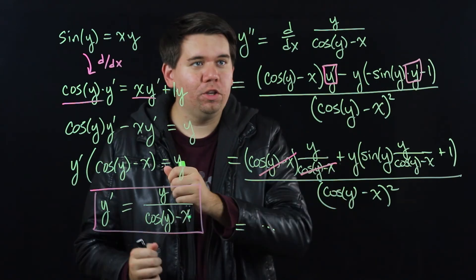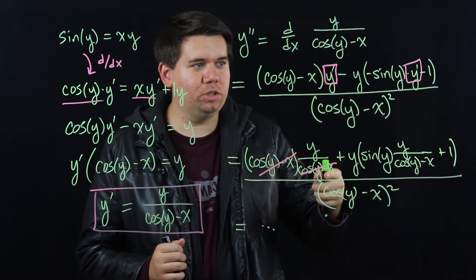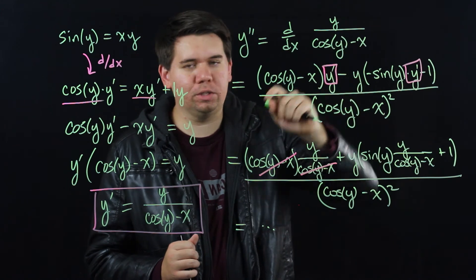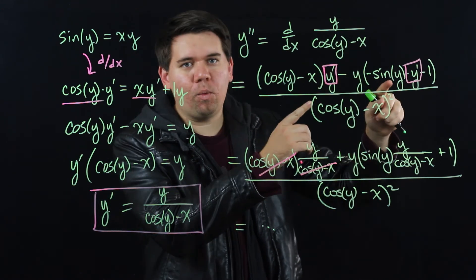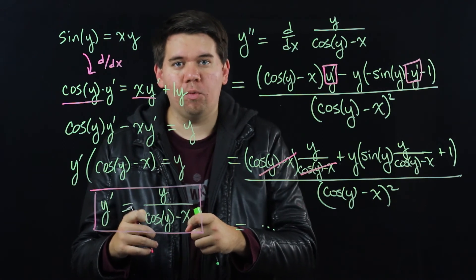Once you have the derivative you can just take the derivative of that and then keep using your implicit differentiation. Remember whenever you have a y, its derivative is just y prime, and once you get y primes in your results you can replace those with what you already know y prime is.